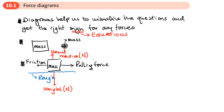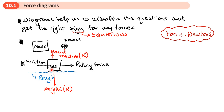In this example the normal reaction and the weight would be balanced — they would be exactly the same value, and their values will be in newtons. All the forces in all the questions we do will be in newtons. In this direction the forces are balanced: the normal reaction equals the weight, R equals W, because this mass is not moving up or down. But if it was moving sideways, those forces would be unbalanced — the pulling force would have to be greater than the frictional force.